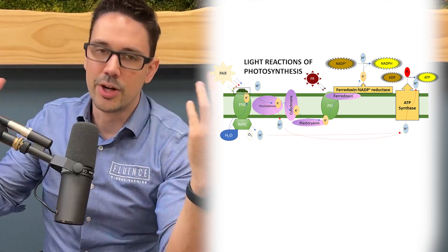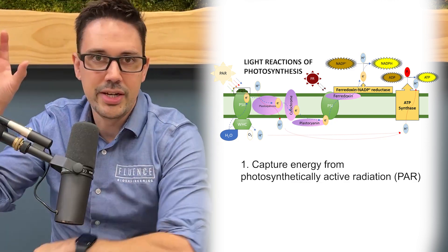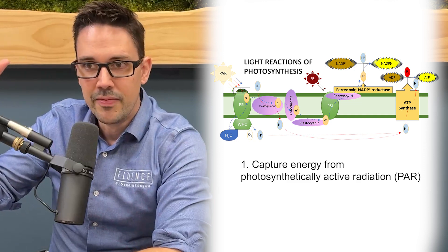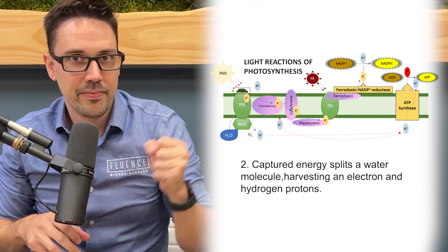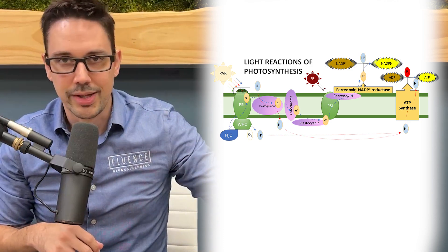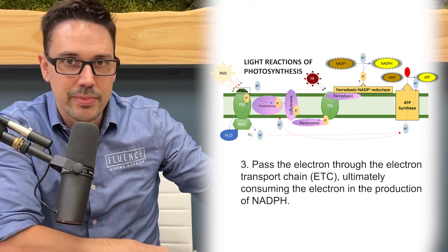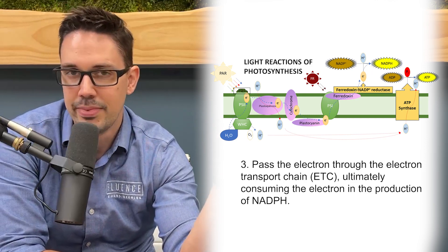To recap: we're taking light energy in the form of PAR light, splitting water to harvest an electron, and that electron is getting passed through an electron transport chain, ultimately to produce biochemical energy in the form of NADPH.